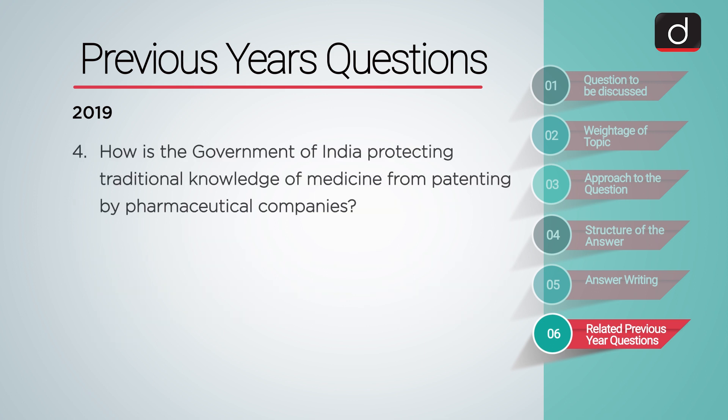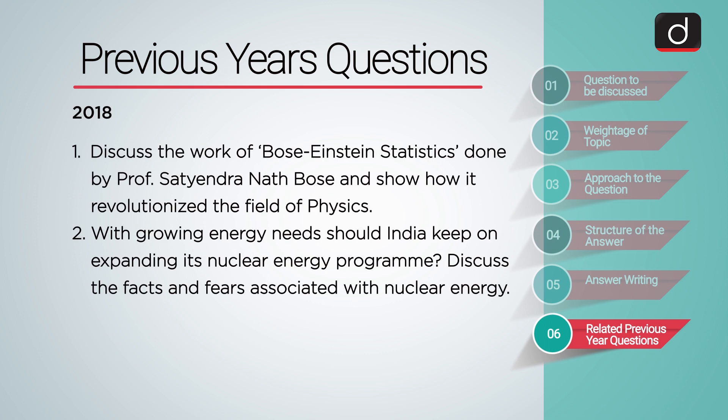Also in 2019: How is the Government of India protecting traditional knowledge of medicine from patenting by pharmaceutical companies? In 2018, the following questions were asked: Discuss the work of Bose-Einstein statistics done by Professor Satyendra Nath Bose and show how it revolutionized the field of physics. With growing energy needs, should India keep on expanding its nuclear energy program? Discuss the facts and fears associated with nuclear energy.